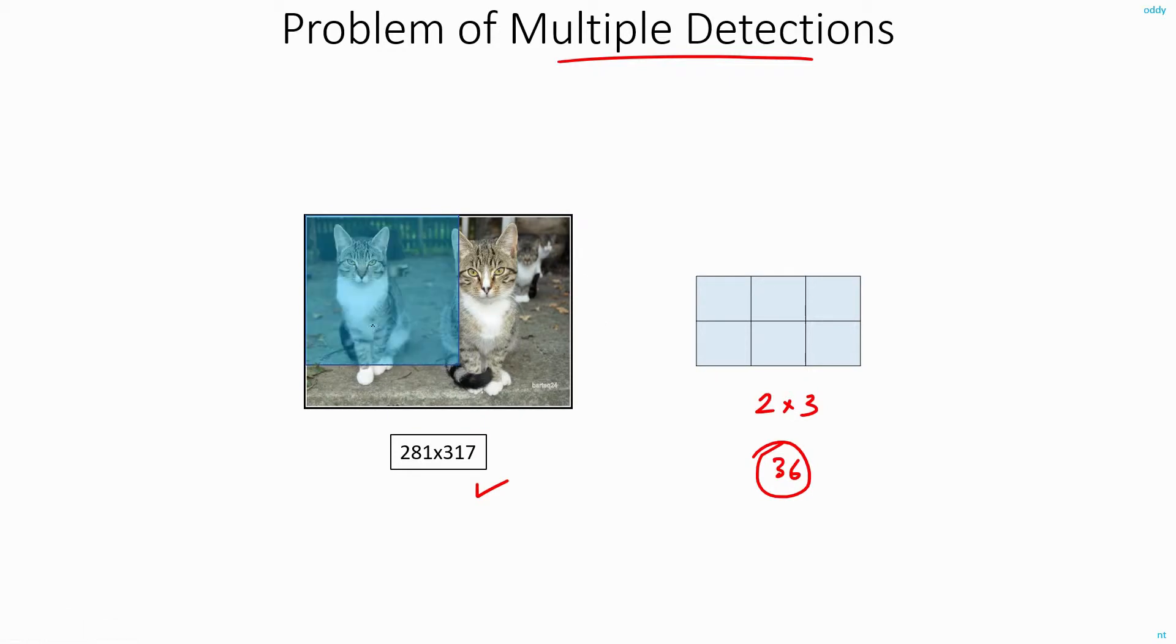Here what happens is, this is your first scanning window location and this blue box is your receptive field. In this case, you will definitely be able to identify this cat. Though the cat is not completely visible, your OverFeat network will make a guess. Maybe it will give this bounding box. At the next position here, this cat is not fully visible, but more portion of the second cat is visible. So even here, it will take a guess and give some bounding box.